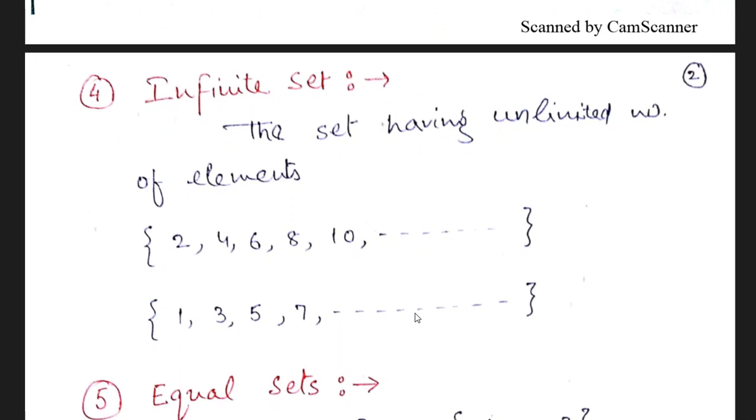Infinite set. What is the meaning of infinite? If they are up to infinity or you can't count the number of elements of the set, then it is called infinite.